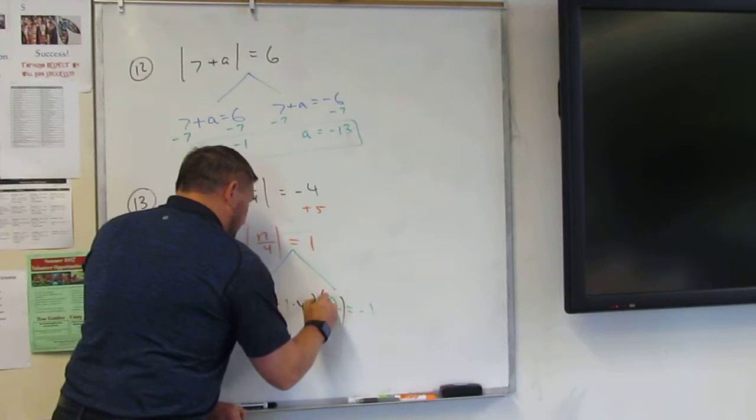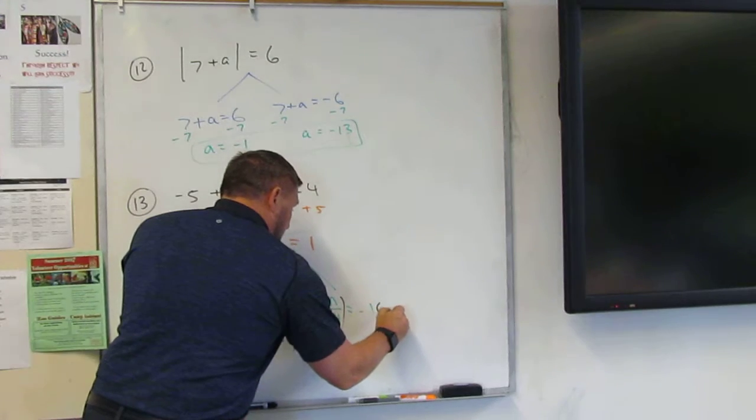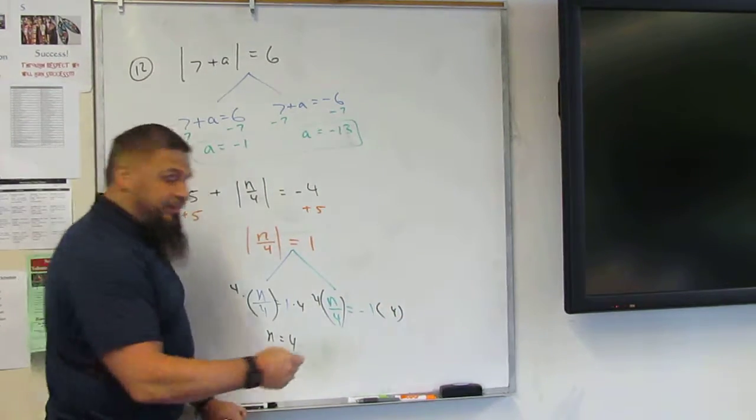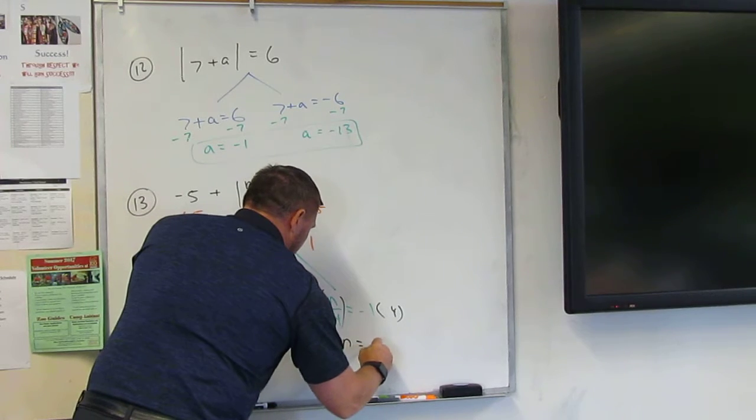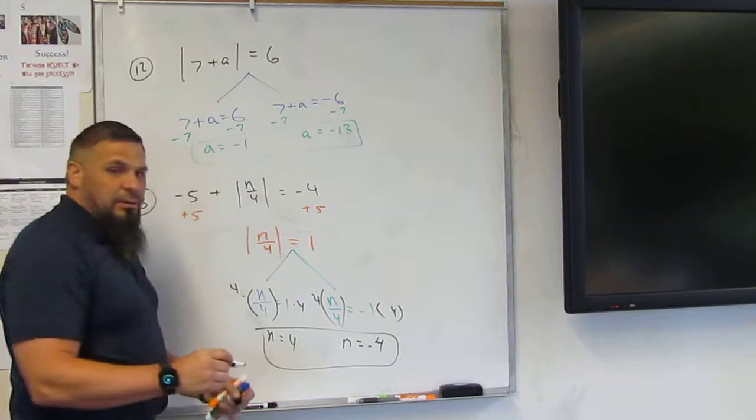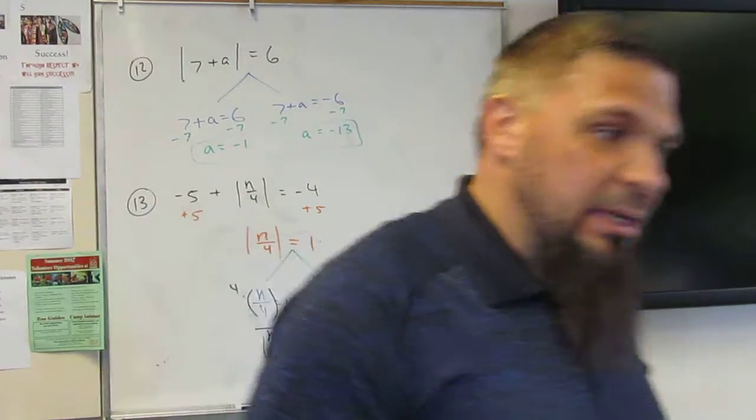Do the same thing to this side. Times 4. Times 4. And then how much is that? Negative 4. And that's your answer. See? It's easy.